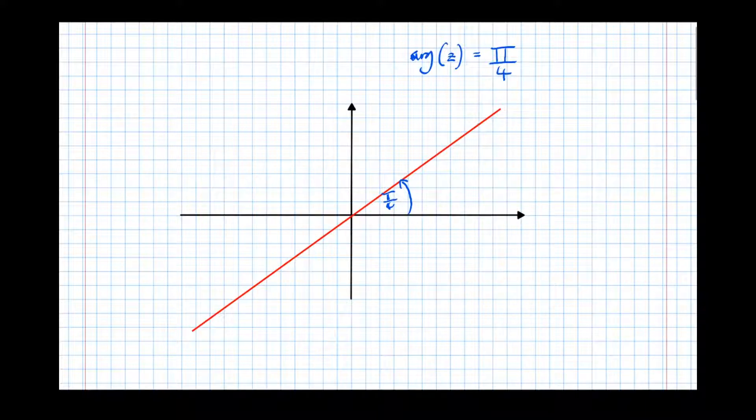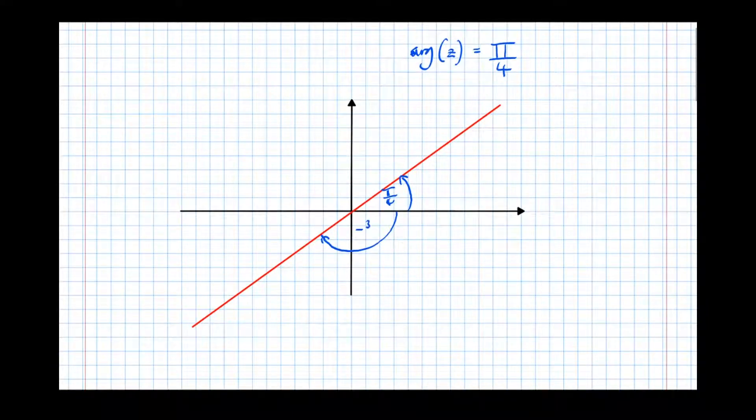So the argument here isn't pi over 4, it's pi over 4 plus this pi over 2 here, so 3 quarters pi, negative 3 quarters pi, in fact. So any of this part of the line here is invalid.